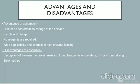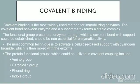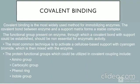Covalent binding is the most widely used method for immobilizing enzymes. A covalent bond between the enzyme and a support matrix forms a stable complex. The functional group present on the enzyme through which a covalent bond with the support is established should be non-essential for enzymatic activity. The most common technique is to activate a cellulose-based support with cyanogen bromide, which is then mixed with the enzyme. Protein functional groups that can be utilized in covalent coupling include amino groups, carboxylic groups, phenol rings, and indole groups.